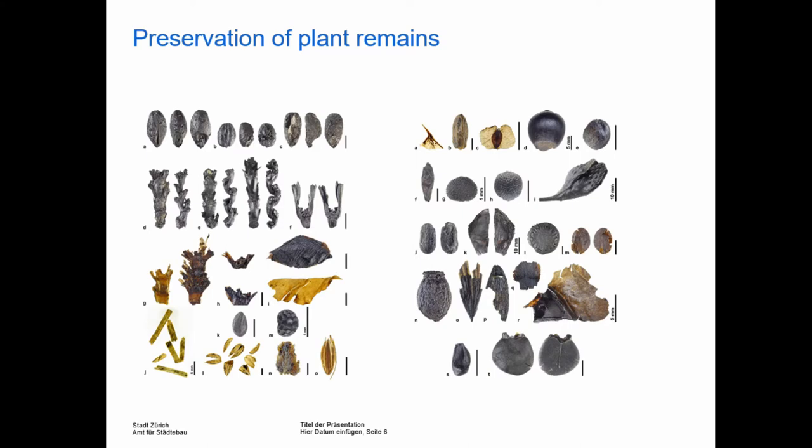The pile dwelling sites are one of the most important archaeological sources for the study of early agrarian societies in Europe, dating between roughly 5,500 and — in Switzerland — 4,200 to 800 BC. The waterlogged conditions have preserved organic matter that contributes in an outstanding way to our understanding of significant changes in the Neolithic and Bronze Age.